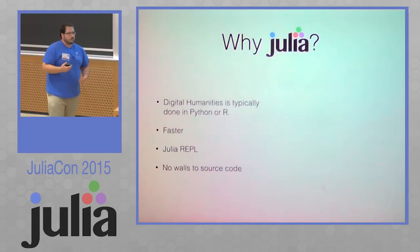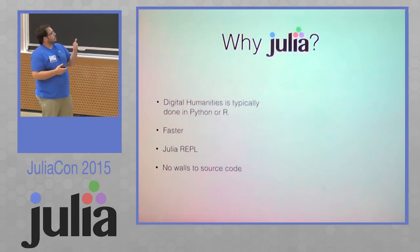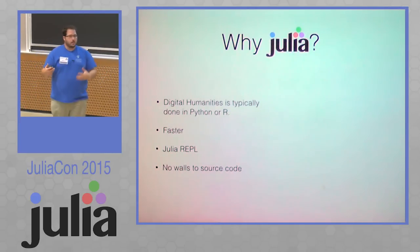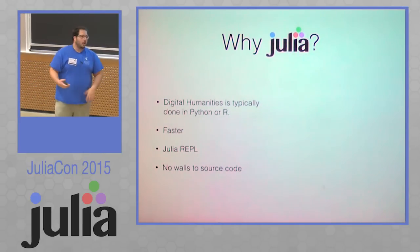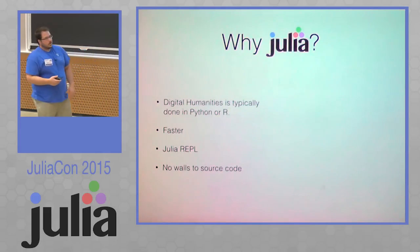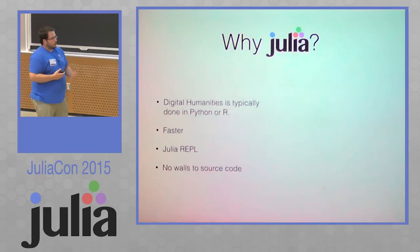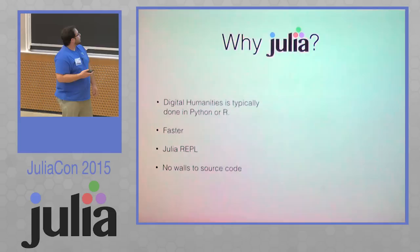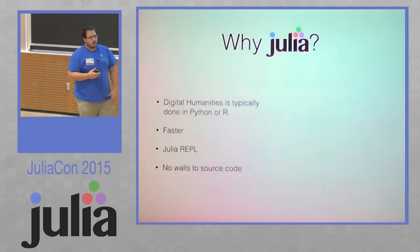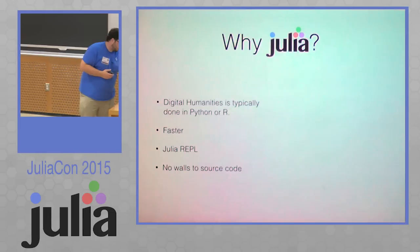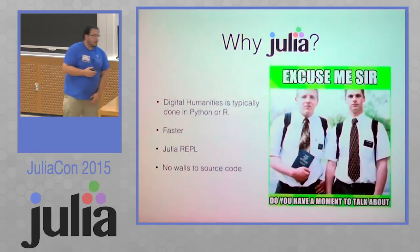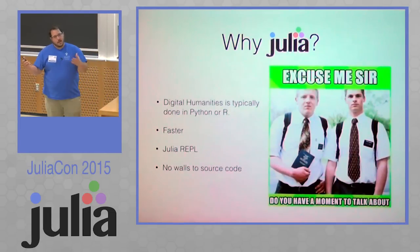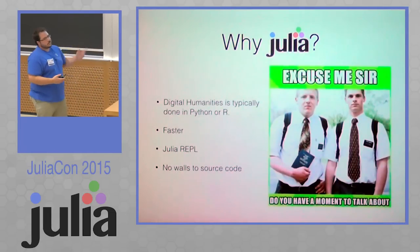Why did we pick Julia? Generally, Digital Humanities is done with R and with Python. But Julia is faster than those languages. It has that console like R and Python does, so you can do on-the-fly requests, and there's really no walls to the code. And most importantly, I read about Julia and went around to everybody and said we should really do this in Julia.